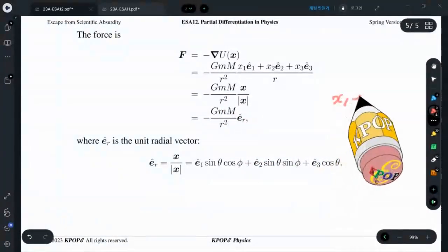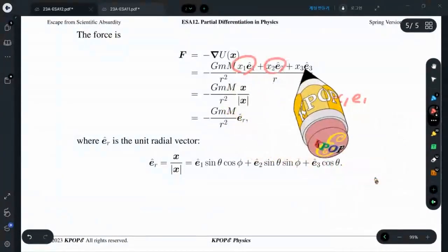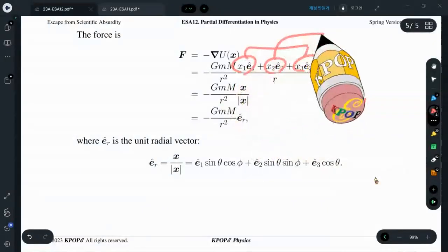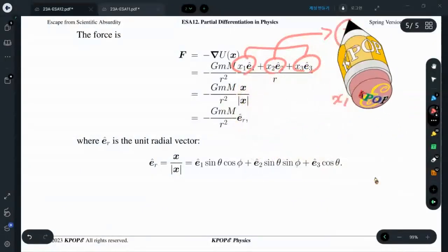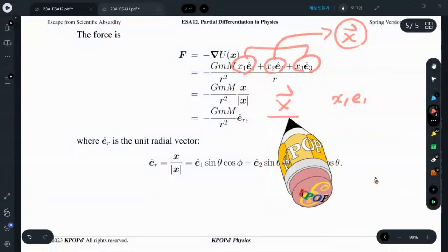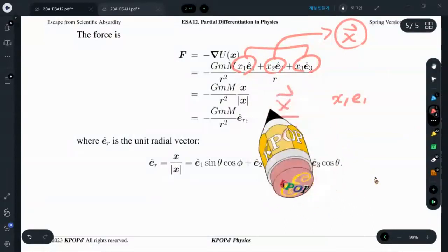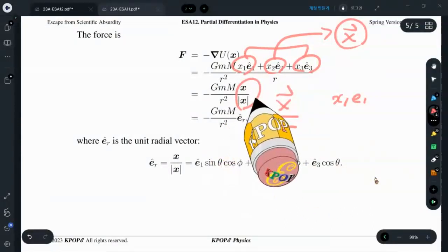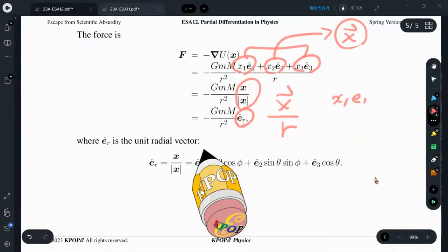x1e1, x2e2, x3e3. What's that? This is x-vector. And x-vector divided by r. So x-vector divided by its magnitude. It is unit radial vector.